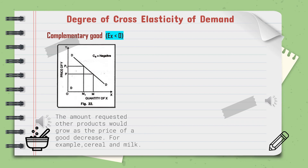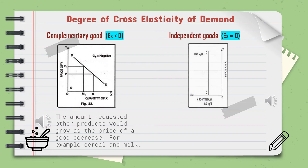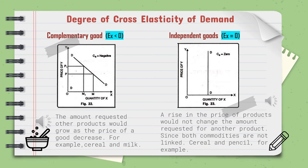The next degree is independent goods, where the value of cross-elasticity equals 0. A rise in the price of one product will not change the quantity demanded for another product because the two commodities are not linked. For example, cereal and pencils are independent goods.